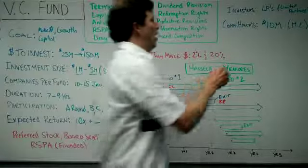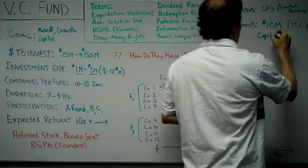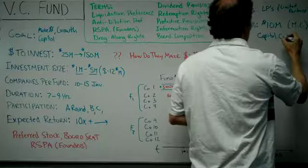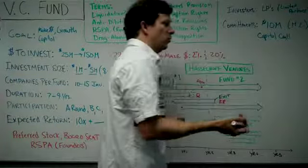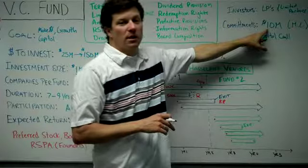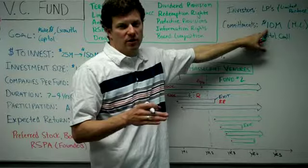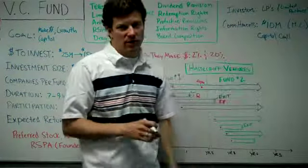Instead, what they do is they will have capital calls. And a capital call means I will ask you for money as I need it, and you will periodically send me checks. So over the next seven or eight years, I may write 10 $1 million checks instead of writing a single $10 million check. And I don't have to come up with all the money now. It happens over time.